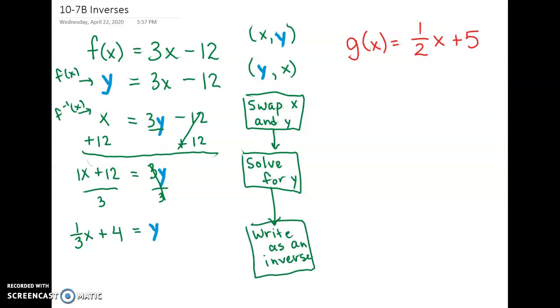we're going to write f inverse of x equals, and then everything else will stay the same, one-third x plus 4.